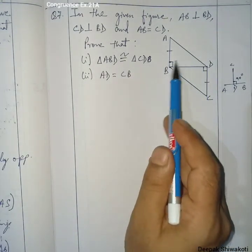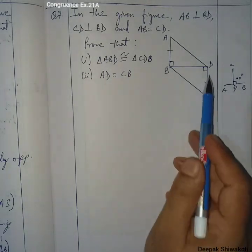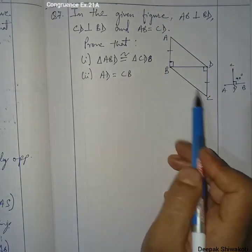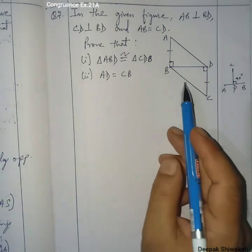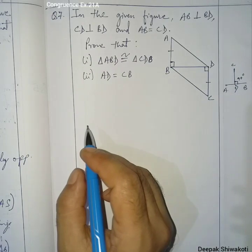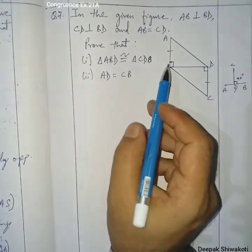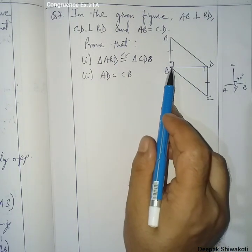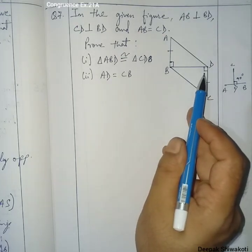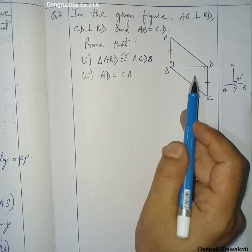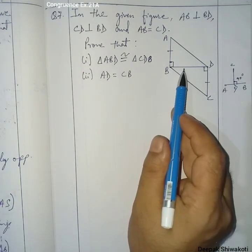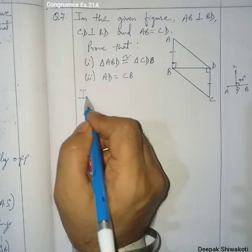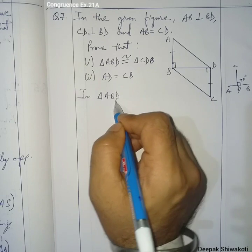We have to prove that triangle ABD and triangle CDB are congruent, and that sides AD and CB are also equal. In each triangle, two sides and the included angle are available. The angle is 90 degrees at both, and side BD is common to both triangles. So we can apply the Side-Angle-Side condition.